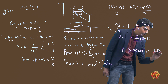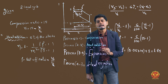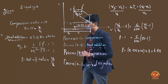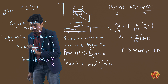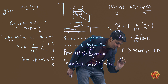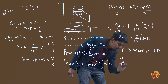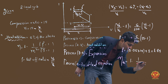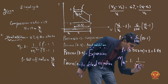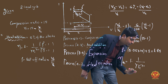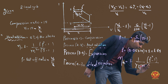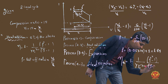The cutoff ratio value is 1.84. Now we put this into the thermal efficiency formula: efficiency = 1 minus [1 / (gamma × r^(gamma−1))] × [(rho^gamma − 1) / (rho − 1)].